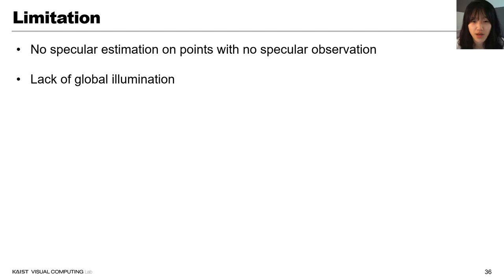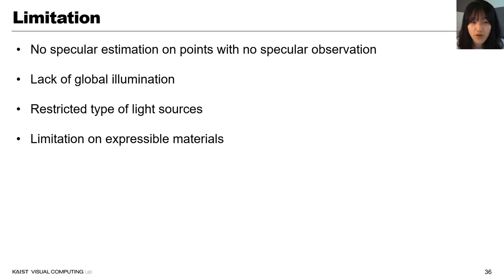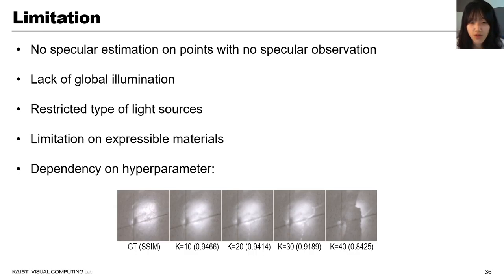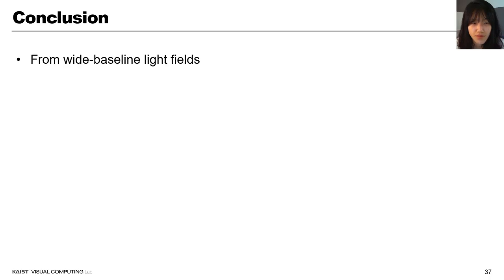Our method is not free from limitation. We cannot estimate specular components on points that have not shown specular reflection at all views. Our image formation model lacks of global illumination, thus overestimates diffuse albedo on the ceiling. The lighting is restricted to a set of diffuse point light sources. And our method cannot express metals or anisotropic material. Also, there is dependency on hyperparameters such as the number of clusters.